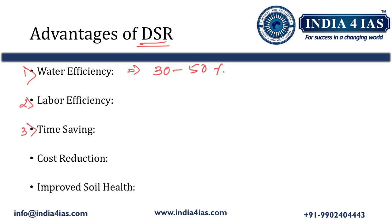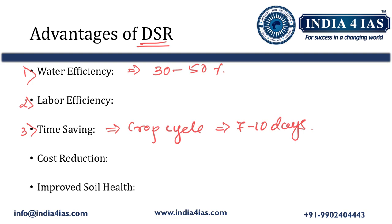The third advantage is time saving. DSR shortens the crop cycle by 7 to 10 days, allowing farmers to get the harvest earlier compared to the conventional transplanting method. The fourth advantage is cost reduction. It lowers the overall cultivation cost by reducing expenses on labor and nursery management. The fifth advantage is improved soil health. DSR promotes better soil structure and reduces methane emissions, contributing to environmental sustainability.